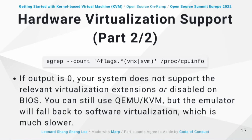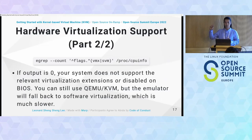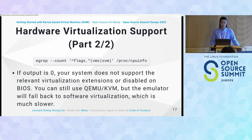If you cannot find either flag, it could mean: virtualization is disabled at the BIOS level — check your BIOS settings; your CPU doesn't support virtualization extensions; or you're using a different processor and need to search for a different flag. If the flag is not there, KVM can still run, but the emulator falls back to software virtualization, which is much slower.